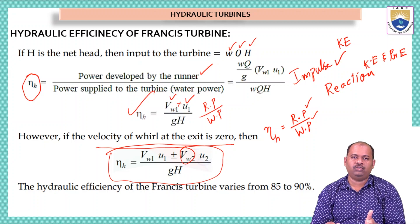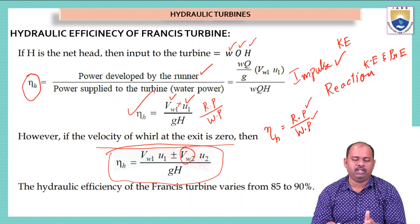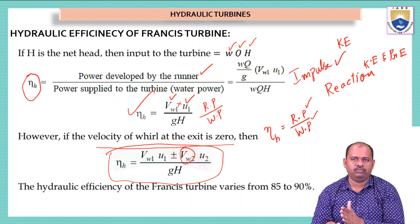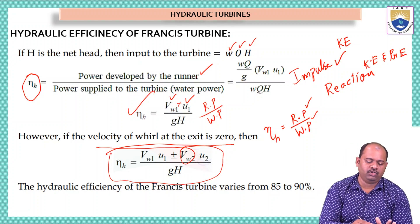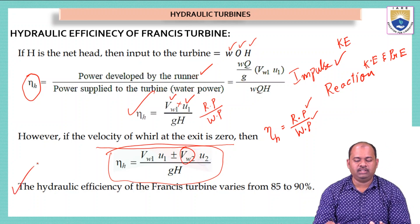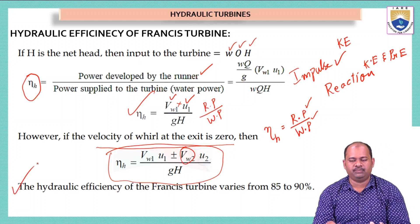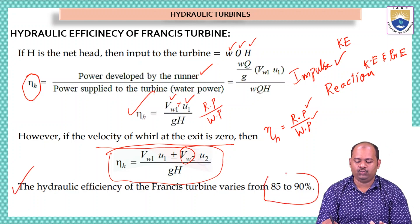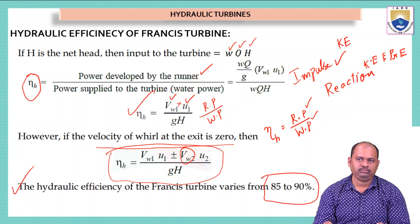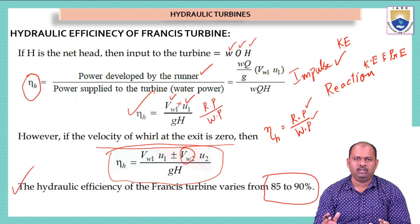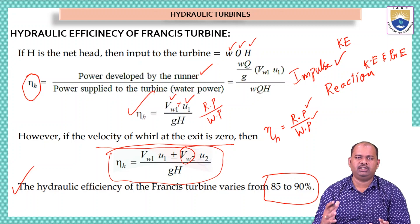The final hydraulic efficiency formula is: (Vw1×U1 ± Vw2×U2) / (g×H). The hydraulic efficiency of the Francis turbine varies from 85% to 90%, meaning the remaining 10–15% is lost due to friction.